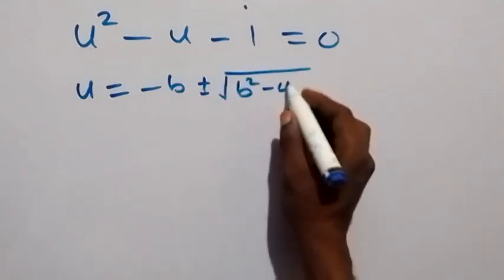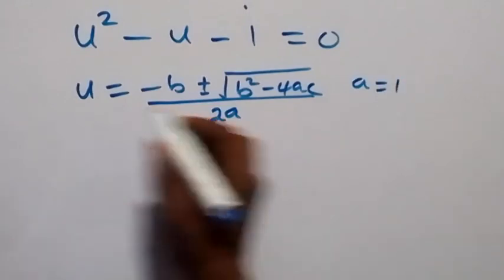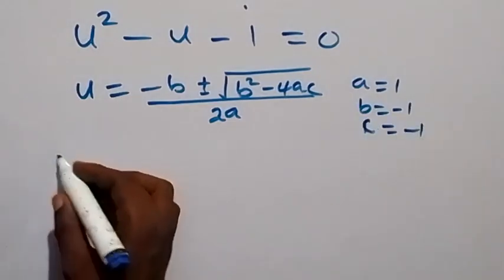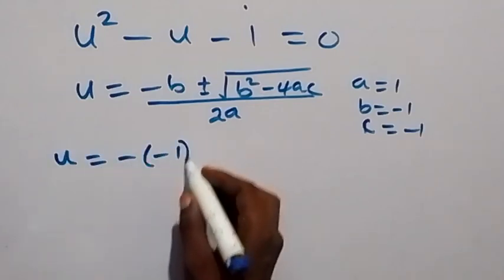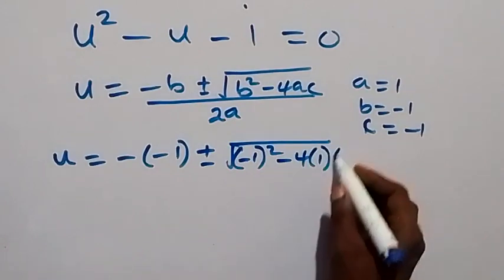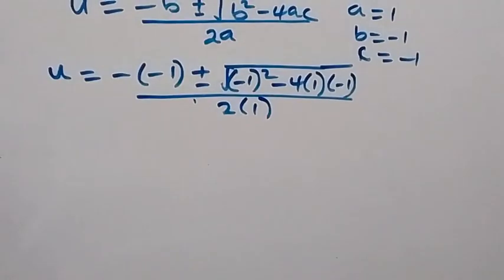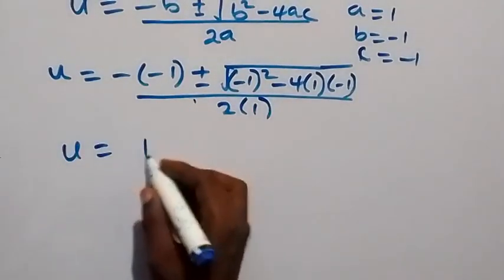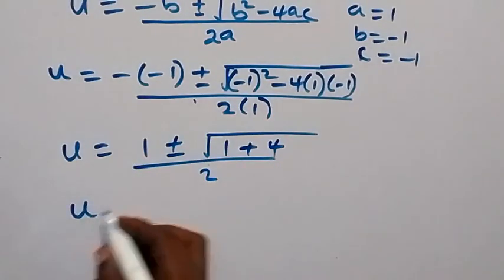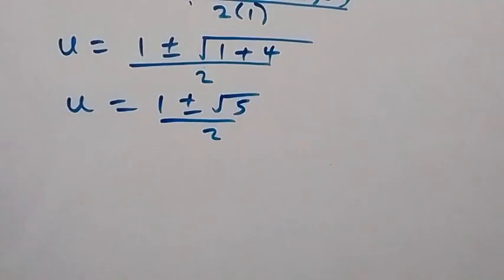We apply the quadratic formula: u equals negative b plus or minus square root of (b squared minus 4ac), all over 2a. Here a equals 1, b equals negative 1, and c equals negative 1. Substituting gives u equals (1 plus or minus square root of 1 plus 4) over 2, so u equals (1 plus or minus root 5) over 2.